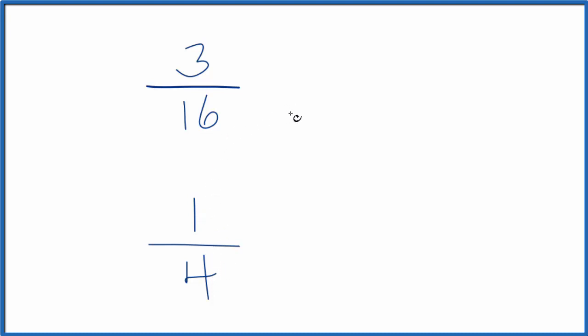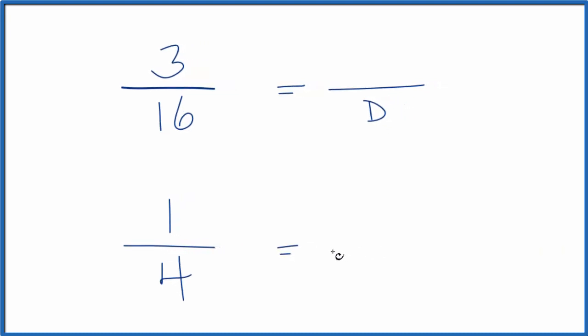There's two ways we can do it. First, we could try to figure out a fraction where the denominator, that's the number on the bottom, is the same for both of these. That way, we could compare the numerators, the number on top. The denominators are the same, we compare the numerators, we can tell which fraction is larger.